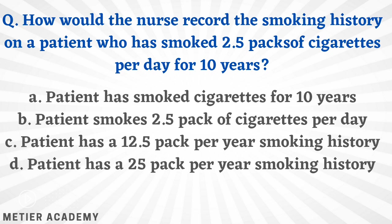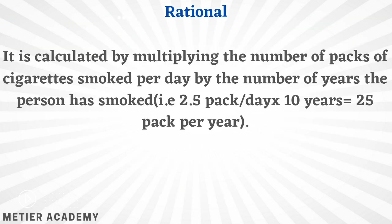Next: how would the nurse record the smoking history of a patient who smoked 2.5 packs per day for 10 years? The correct answer is option D — patient has 25 pack-per-year smoking history. It is calculated by multiplying the number of packs smoked per day by the number of years smoked: 2.5 packs/day × 10 years = 25 pack-years.